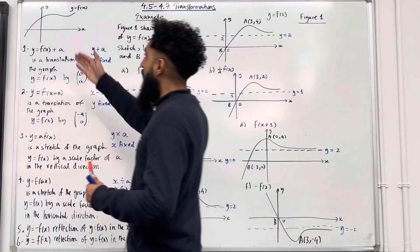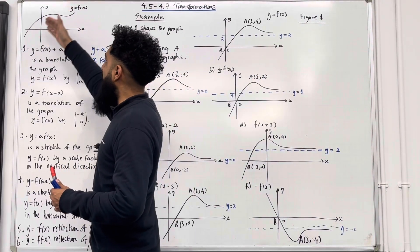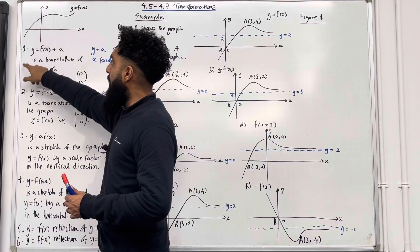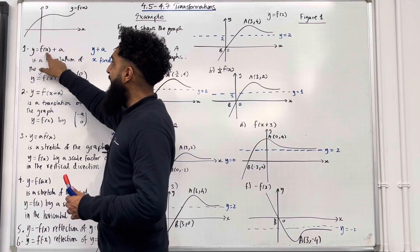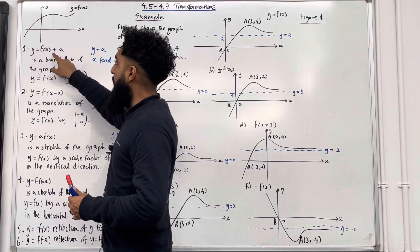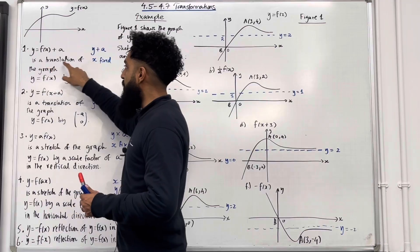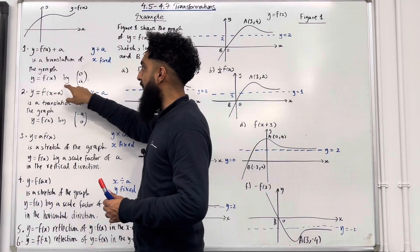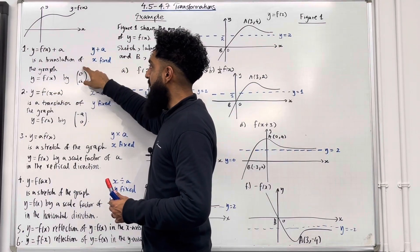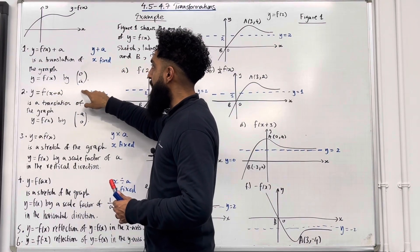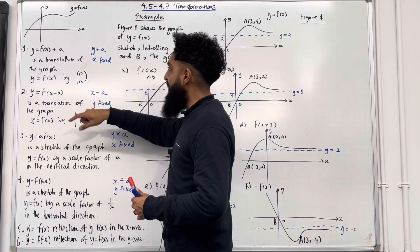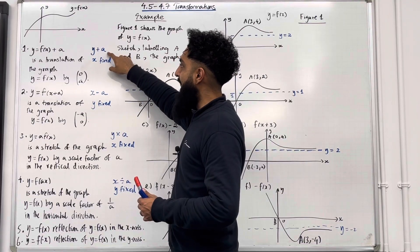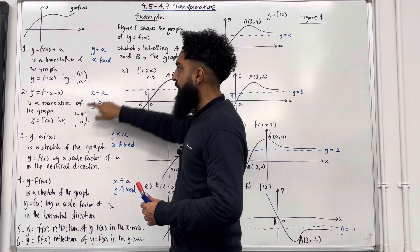Over here I've got a general curve y equal f of x. Number 1: y equal f of x plus a, where the plus a is on the outside, is a translation of the graph y equal f of x by the vector (0, a). In other words, you take the y coordinate and you add a, keeping x fixed.